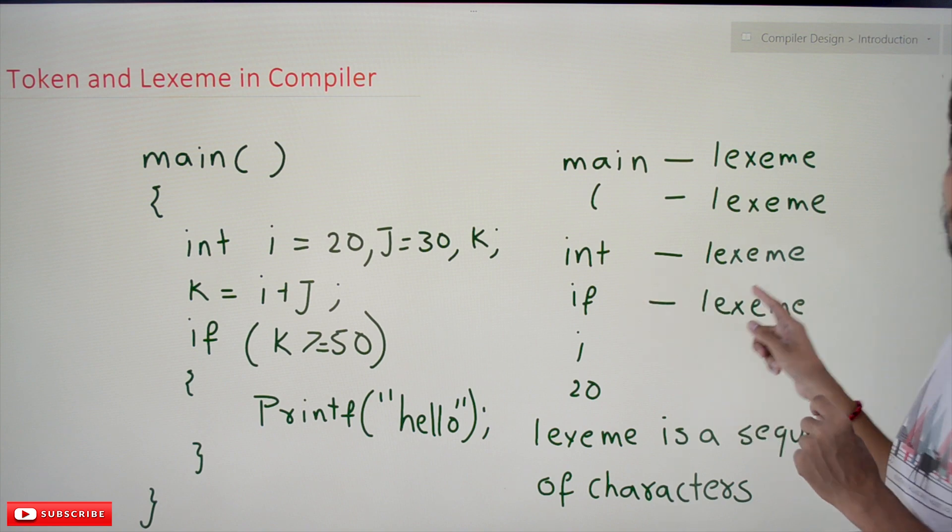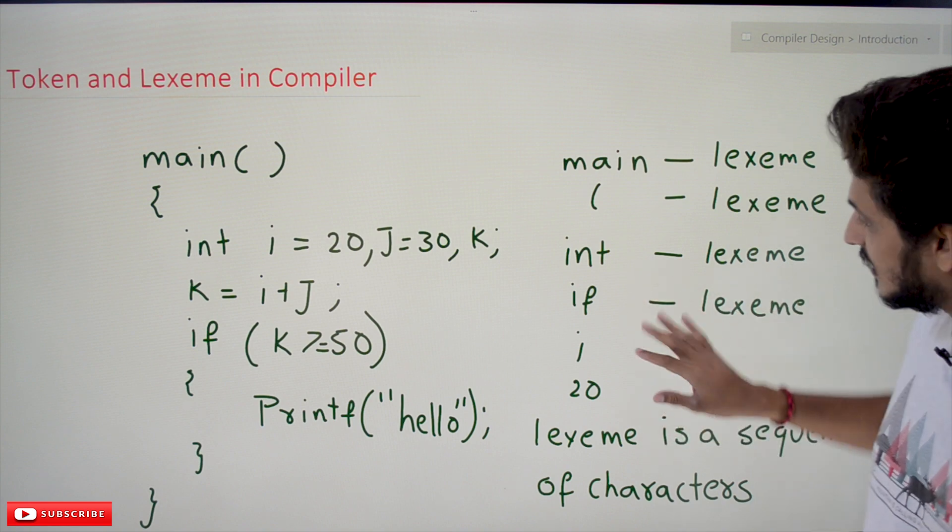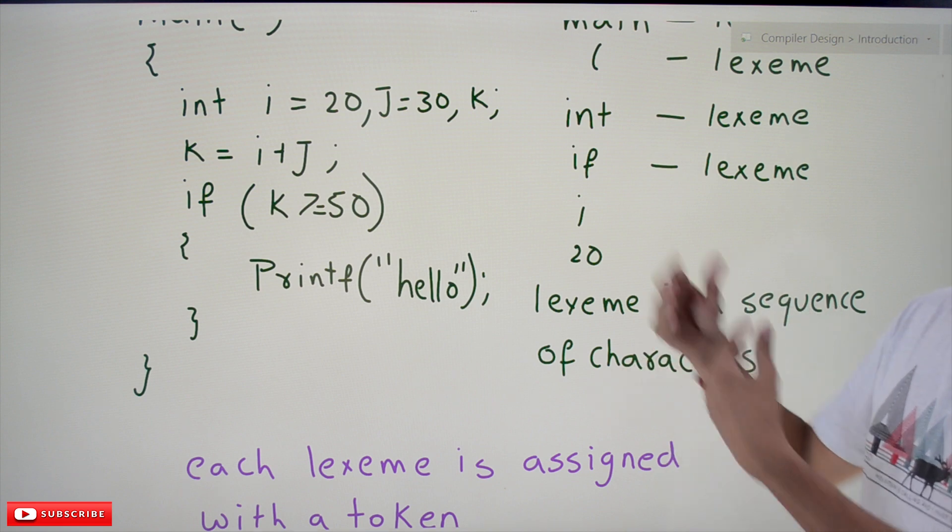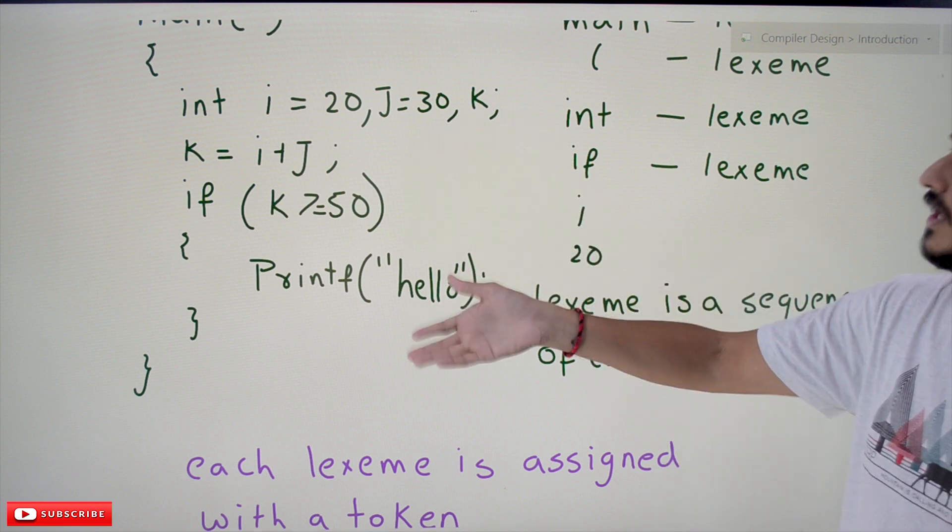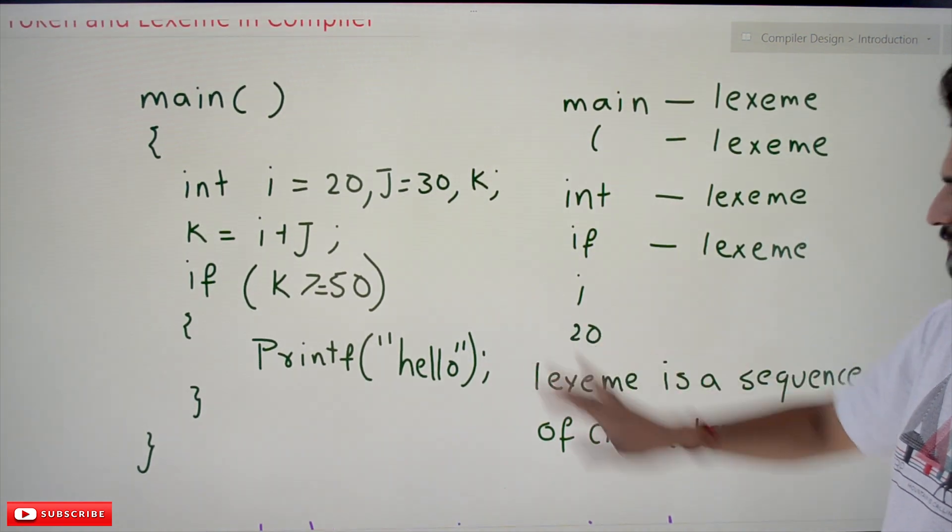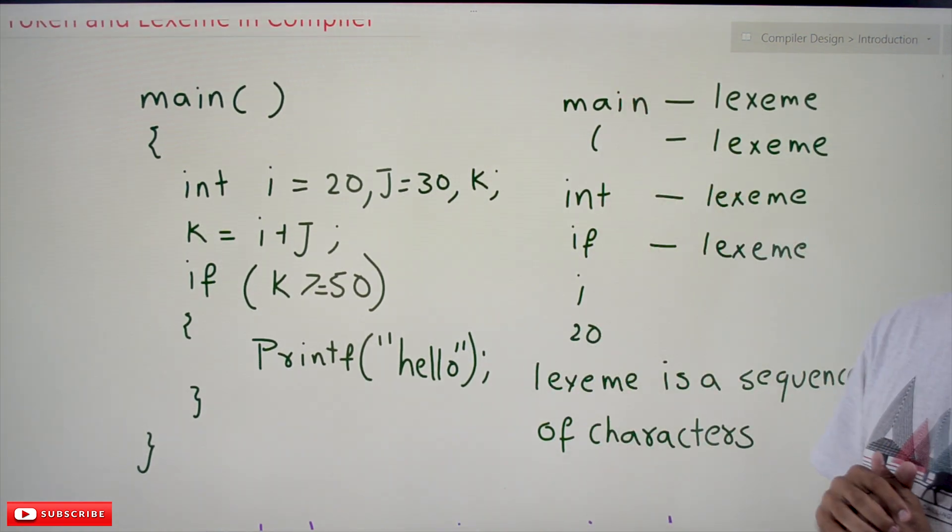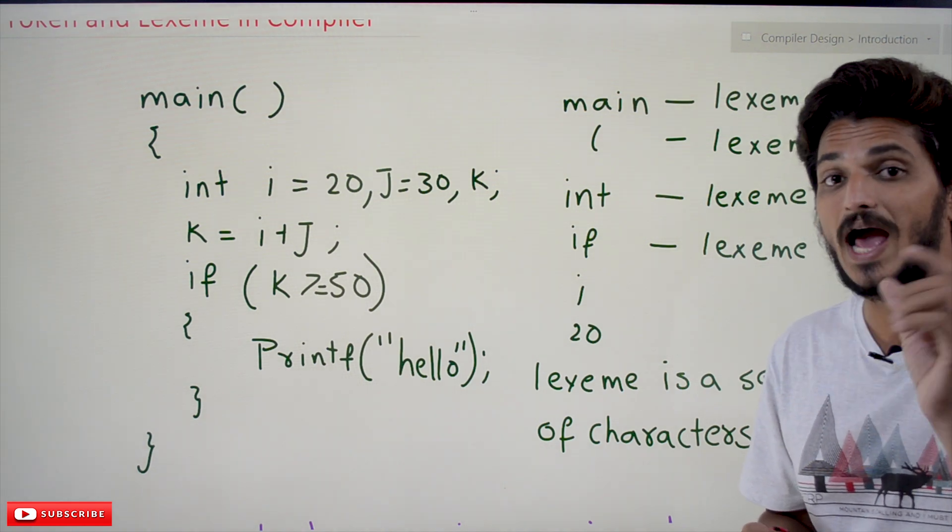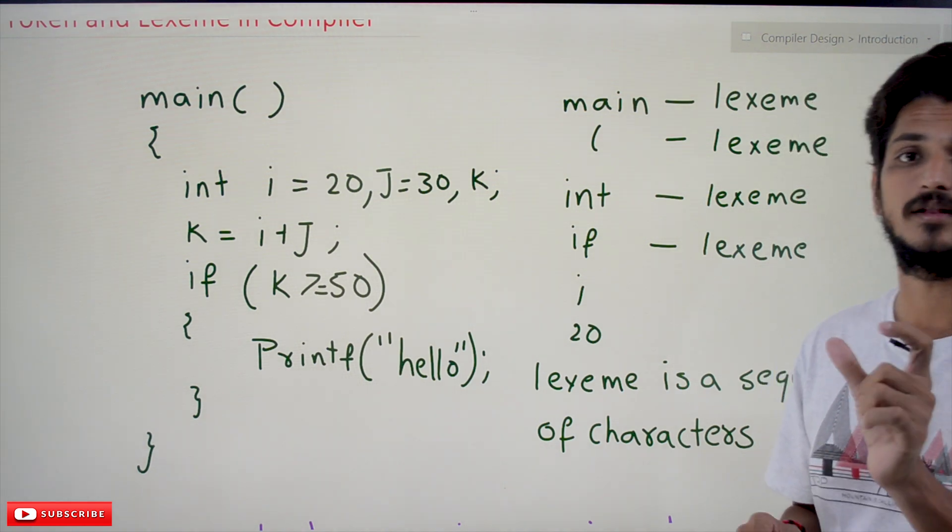So from this we understand that lexeme is a sequence of characters that are identified in our lexical analysis phase. All these are lexemes. But for each lexeme we will have a separate token.